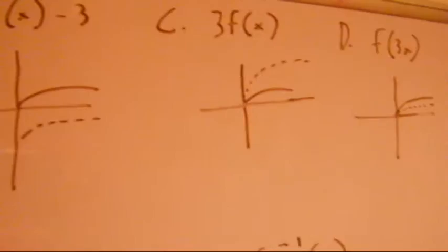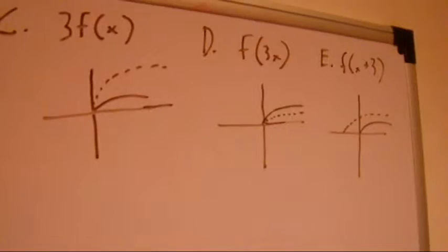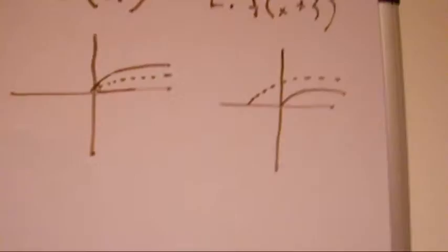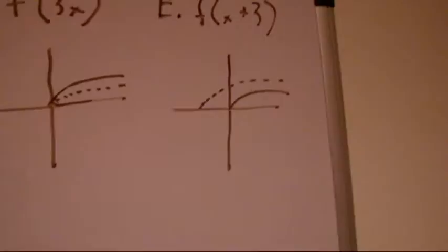C, 3f of x, makes the line wider. F of 3x makes it thinner. E, f of x plus 3, moves the line to the left by 3.